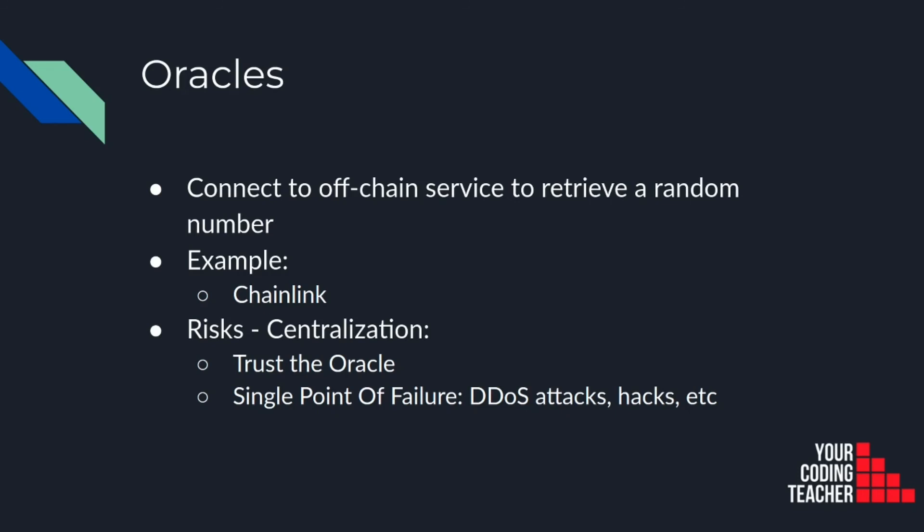The last technique we are going to see in this video is based on oracles. Your contract can connect to an off-chain service to retrieve a random number. For example, Chainlink is a very well-known oracle — you could connect to Chainlink, ask for a random number, and then use it in your code. The problem with this approach is that we have introduced a third party, the oracle, bringing all the usual problems of centralized solutions. For example, you have to trust the oracle, the oracle becomes a single point of failure, it might not be online due to a DDoS attack, can be hacked, etc.